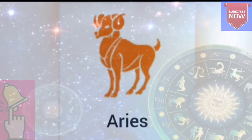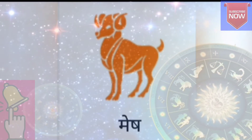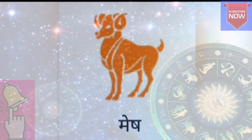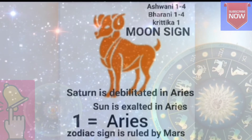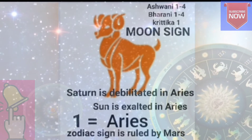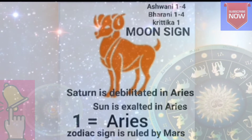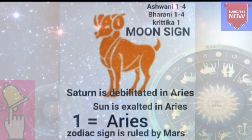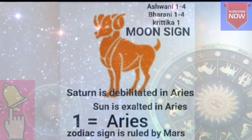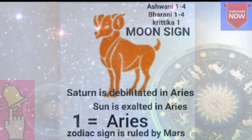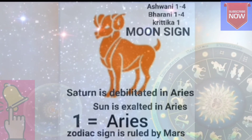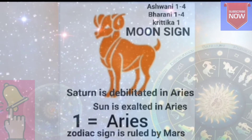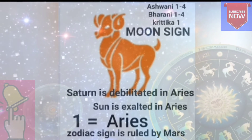Aries — it is called Mesh in Hindi. This sign is ruled by Mars. Sun is exalted in Aries and Saturn is depleted in Aries. The nakshatras are: Ashwini 1 to 4 Pada, Bharani 1 to 4 Pada, and the first Pada of Krittika.